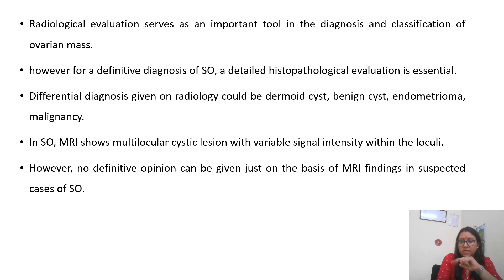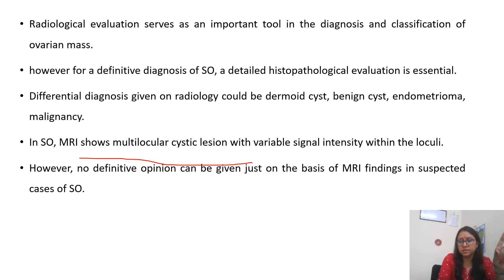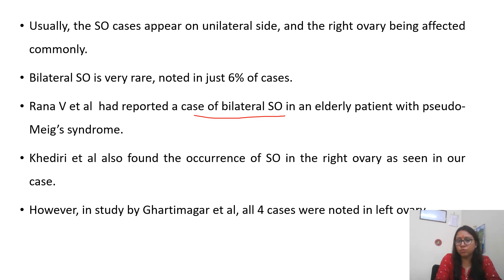Radiological evaluation is very important in classification of ovarian tumors, but definitive diagnosis requires histopathological evaluation. In struma ovarii, MRI will show a multilocular cyst with variable signal intensity, but no definitive opinion can be given based on MRI alone. Struma ovarii usually appears as a unilateral mass, with the right ovary being affected more commonly. Bilateral occurrence is rare, seen in just 6% of cases. Ranavi et al. reported a case of bilateral struma ovarii in an elderly patient with pseudomyxoma peritonei.